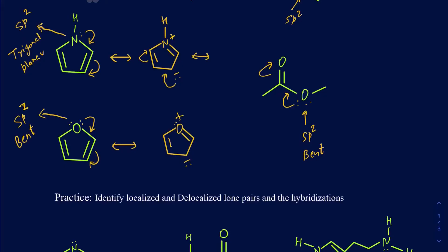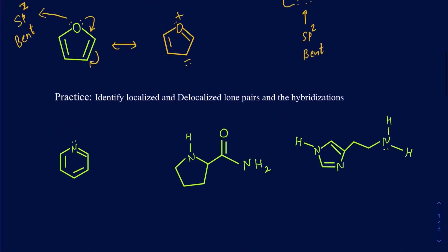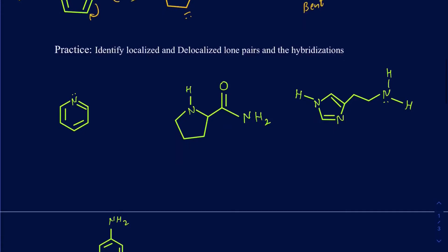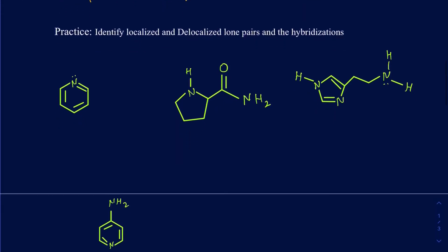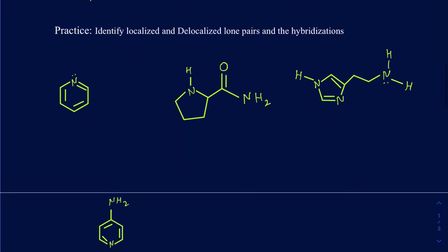Similarly, the oxygen on the right side also has two lone pairs. One of those lone pairs is going to be considered allylic, so it can resonate. As a result, this oxygen will also be sp2 with a bent structure, because one lone pair is still part of the hybridization while only one of them is delocalized. Let's try to do some practice.